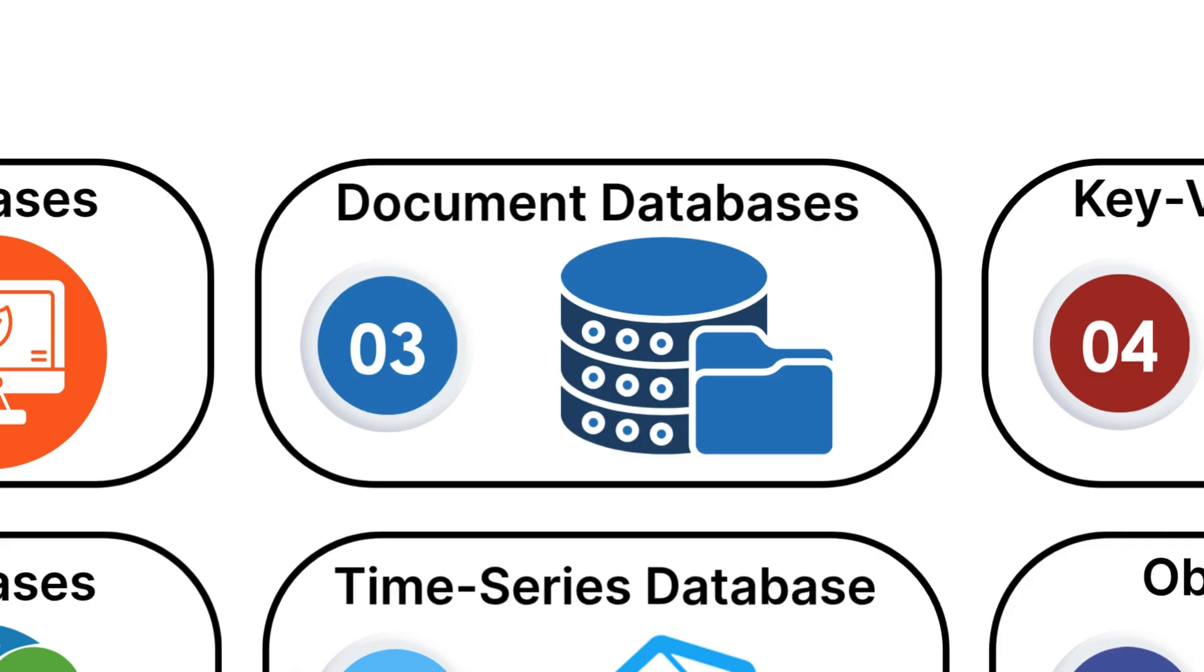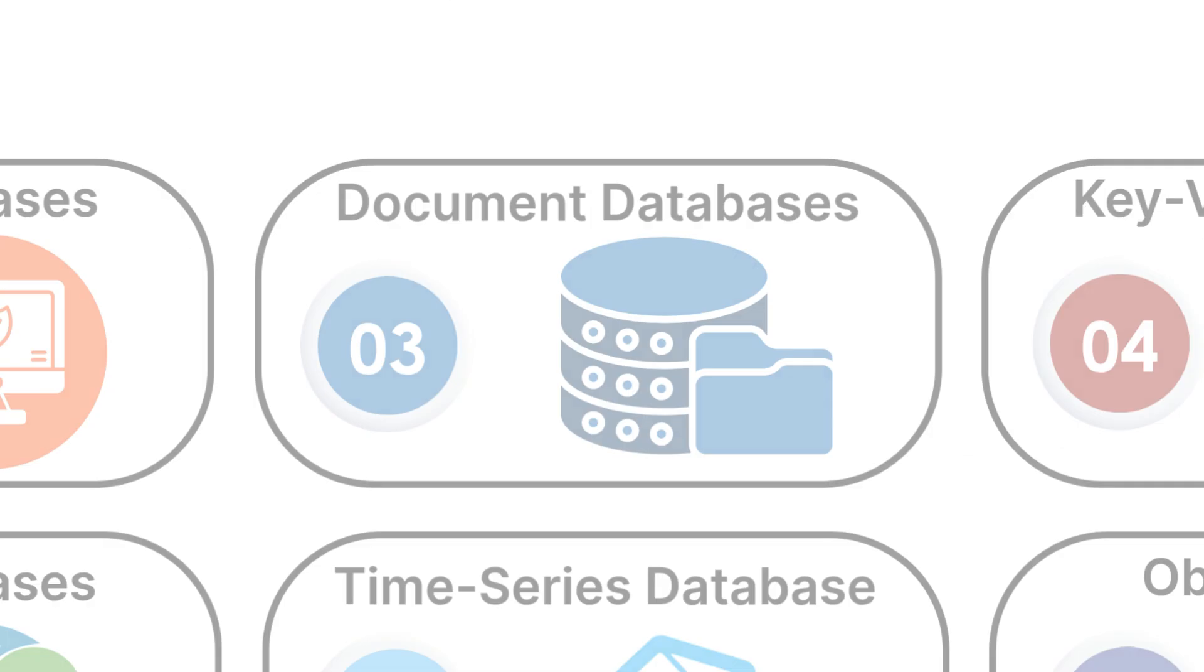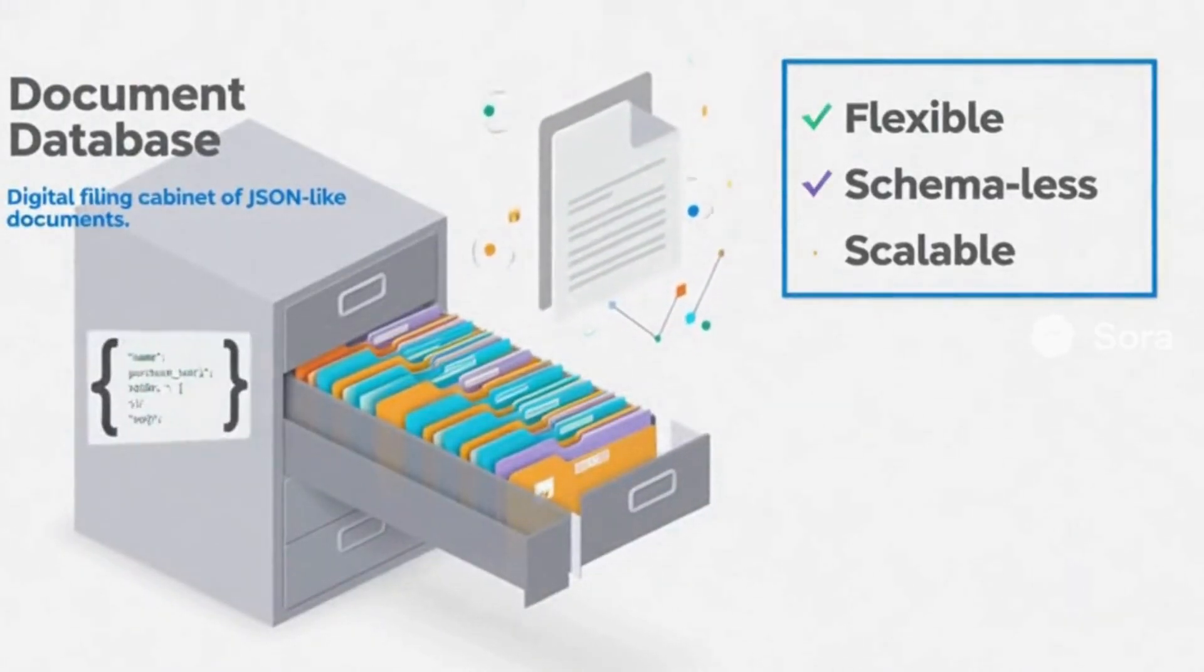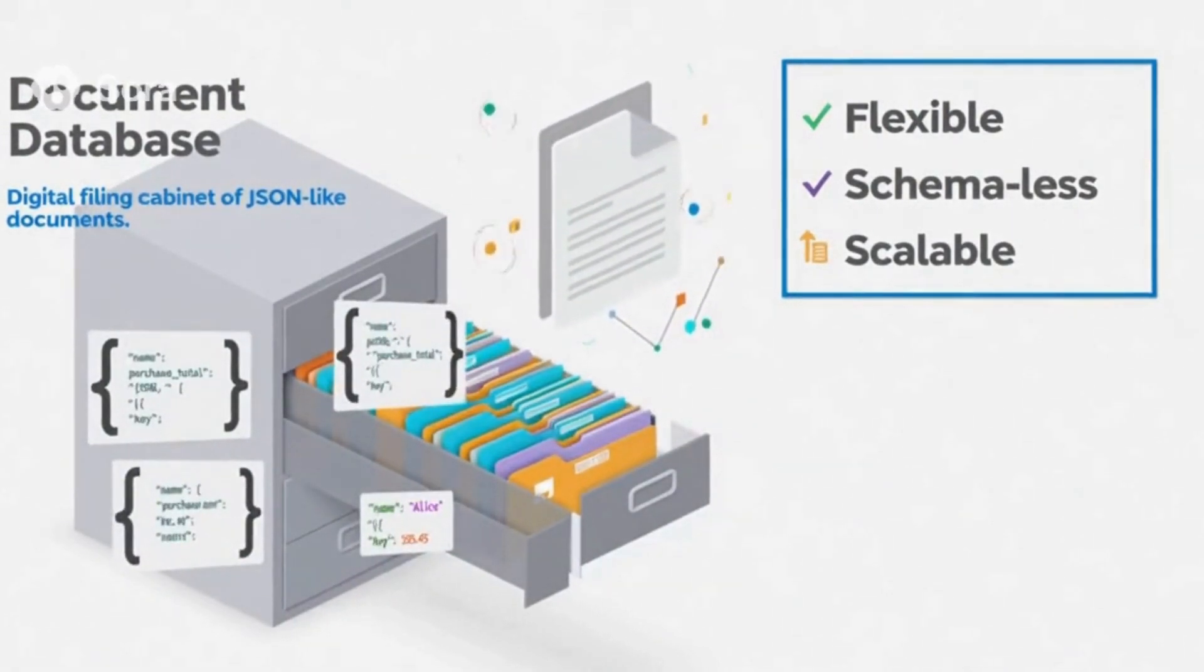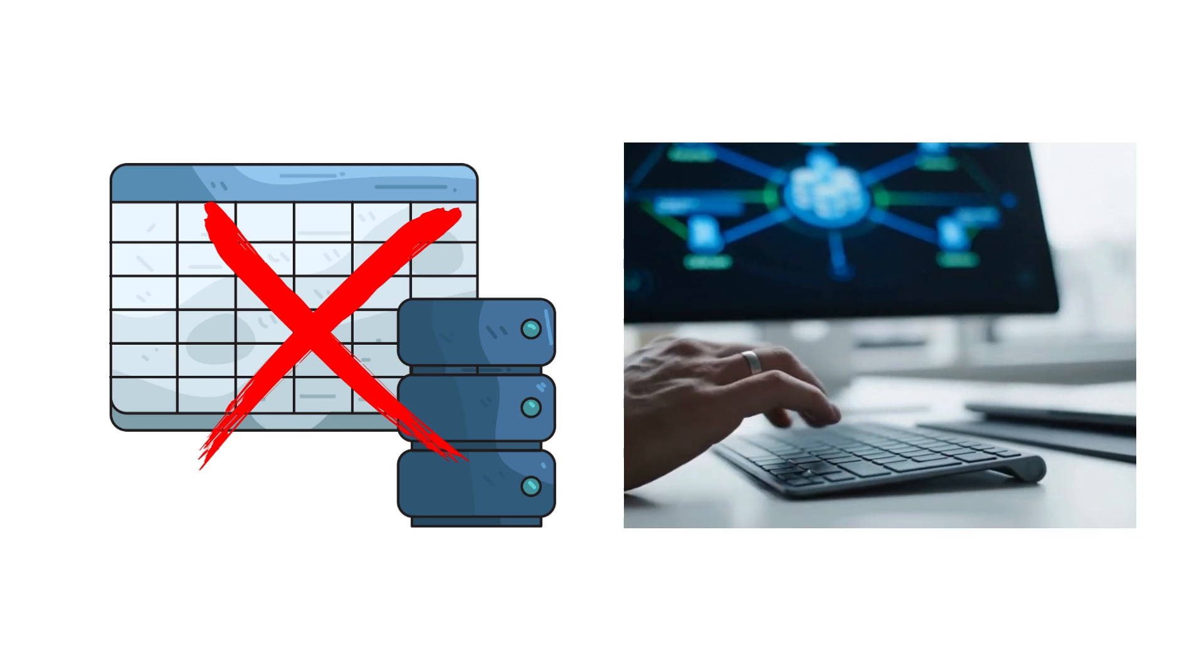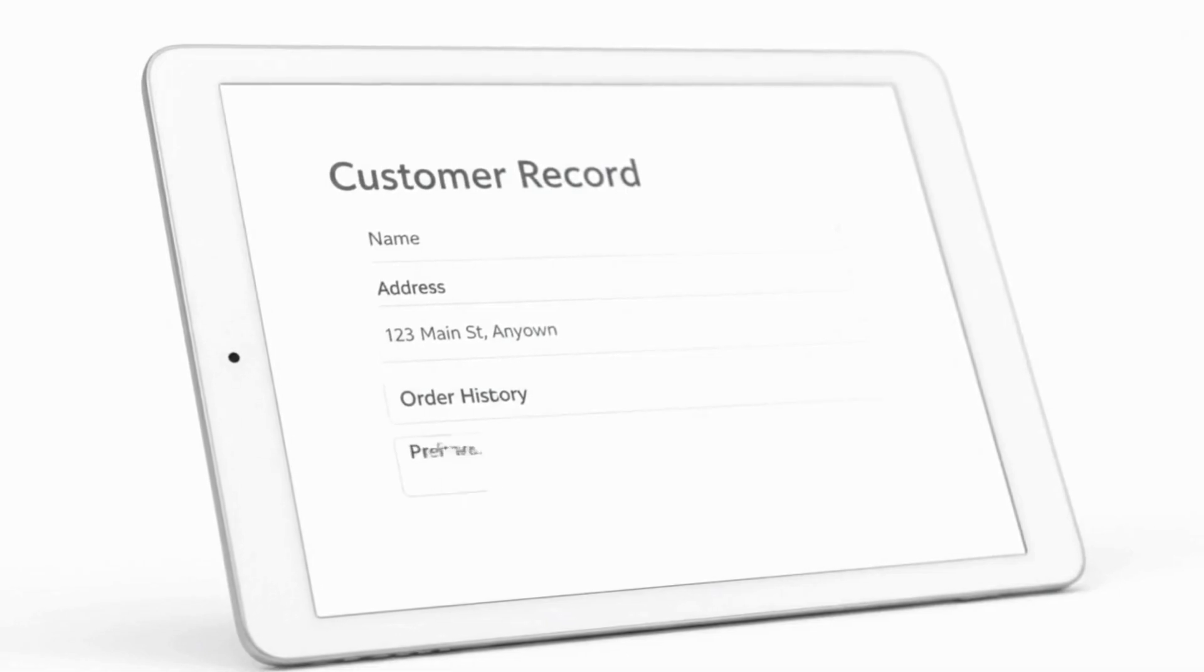Number three, Document Databases. Document Databases are a specific type of NoSQL database that stores information in documents. Think of them like digital filing cabinets full of folders. Instead of forcing data into rigid tables, document databases let you store information more naturally.